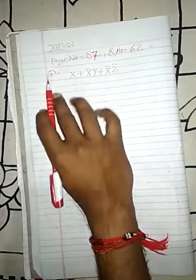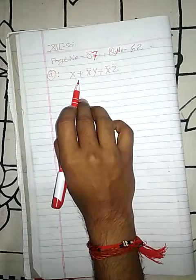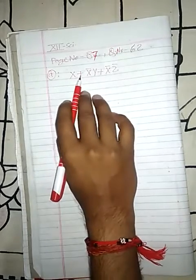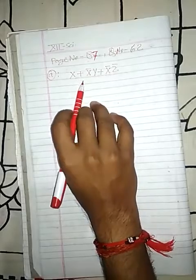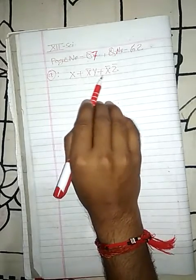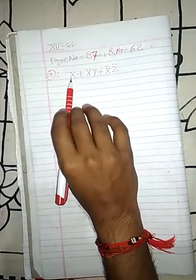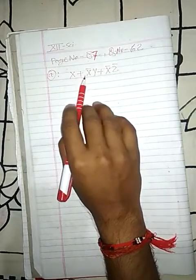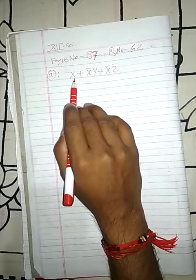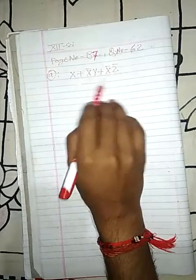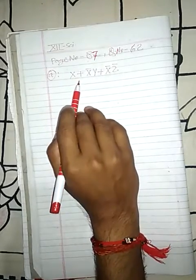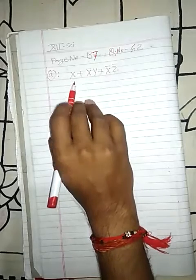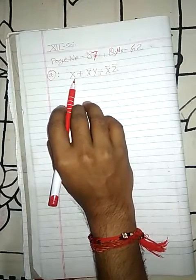Question 61A: the expression is x plus x-bar y plus x-bar z-bar. We have to convert this expression into the canonical sum of product. Some of you may ask that it is already in sum of product form — there is x, x-dot-y, x-dot-z with a sum sign — so it looks like a sum of product.